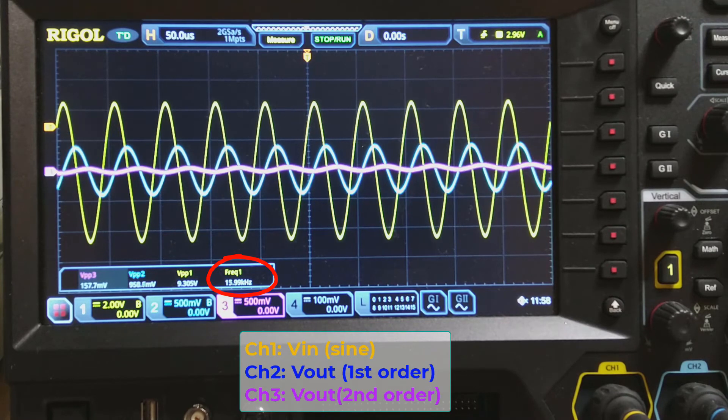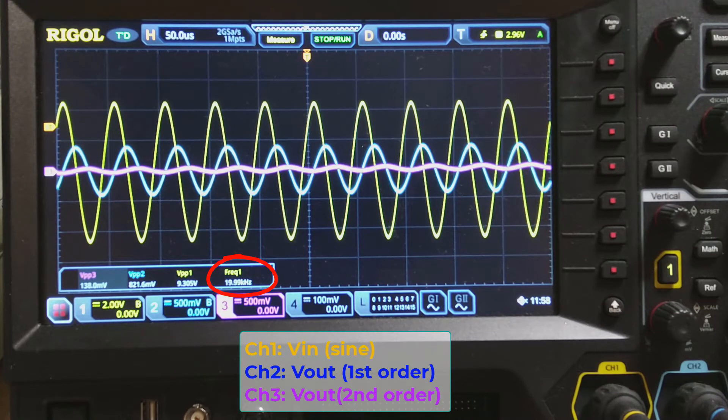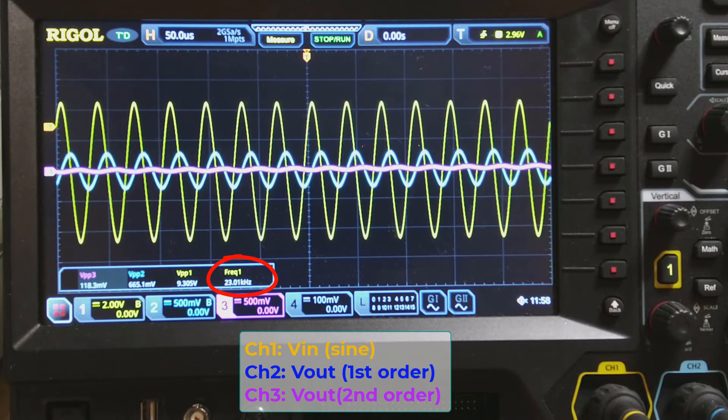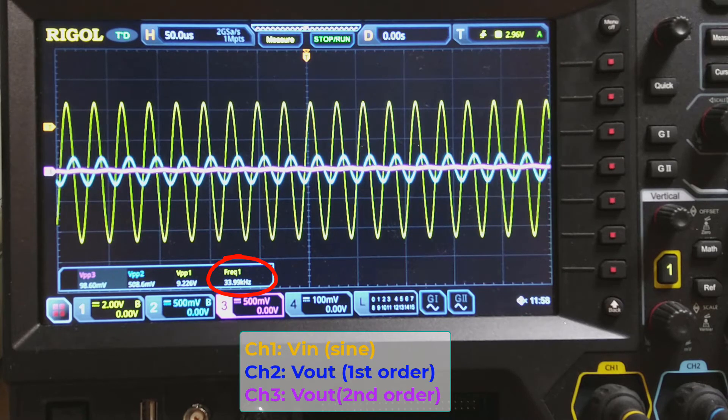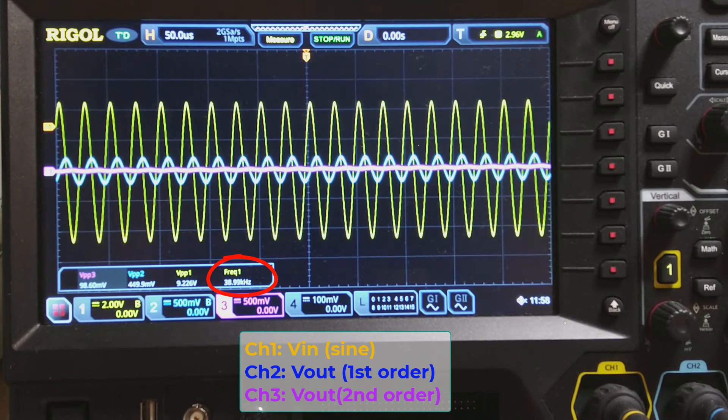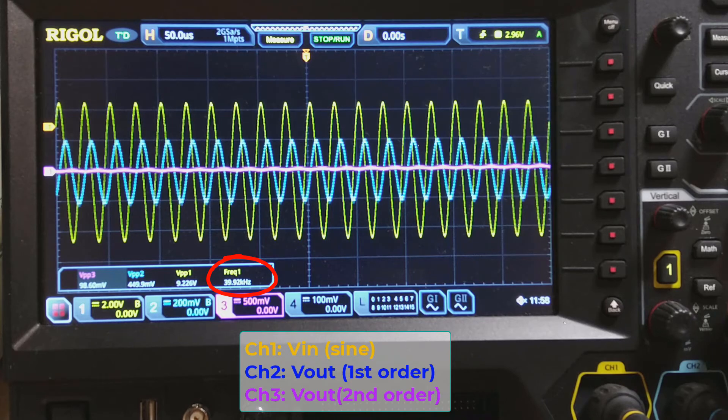Now, channel 2 and channel 3 are in 500 mV per division. Notice that channel 3 has more attenuation as frequency increases, since it has two poles in the transfer function that has a magnitude slope at minus 40 dB per decade.